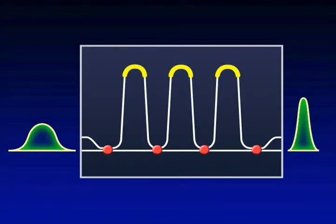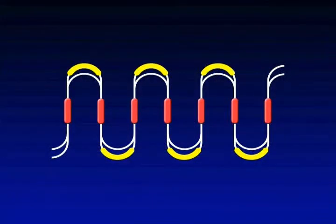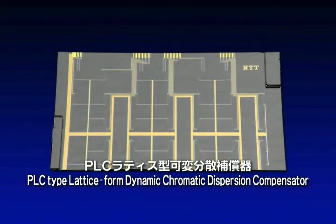In other words, it becomes possible to control a transit time for each wavelength light wave in an optical pulse or chromatic dispersion. Six steps of such optical waveguides on one chip compose a PLC-type lattice-form dynamic chromatic dispersion compensator.